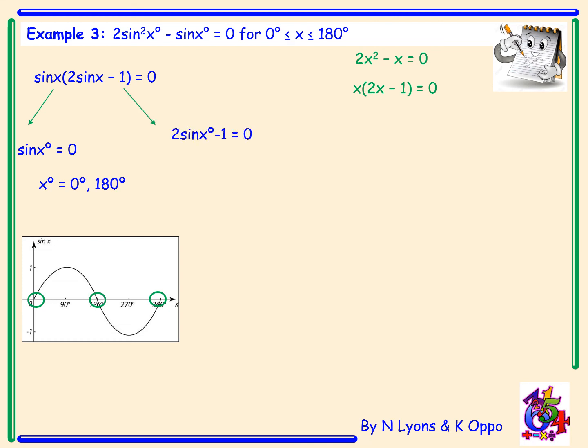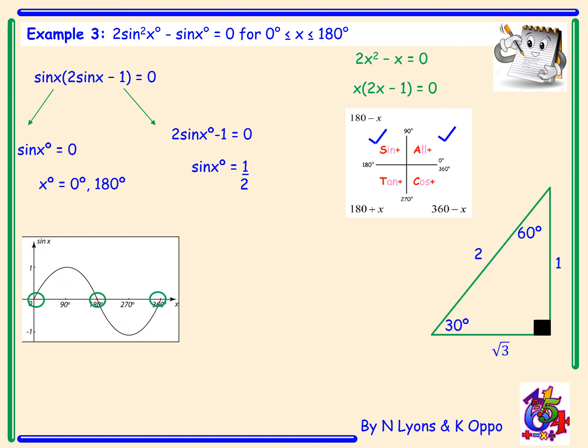Then we make 2 sin x − 1 = 0 and rearrange to make sin x the subject: take the 1 over, add it, then divide by 2. So sin x equals positive one half. Because it's positive, sin x lies in the first and second quadrant.